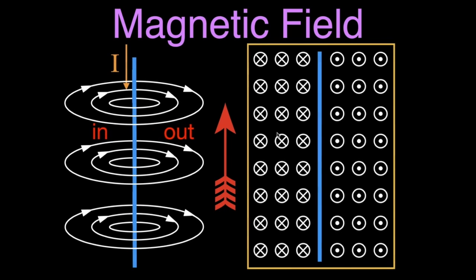We can do the same thing if the current is flowing in the opposite direction. Now on the left-hand side, the magnetic field is moving into the page and we have our X's on the left-hand side. The magnetic field is moving out of the page on the right-hand side, and you can see the tips of the arrows representing the magnetic field as it moves out of the page. That's how we represent the magnetic field on a two-dimensional piece of paper from a wire with a current flowing through it.